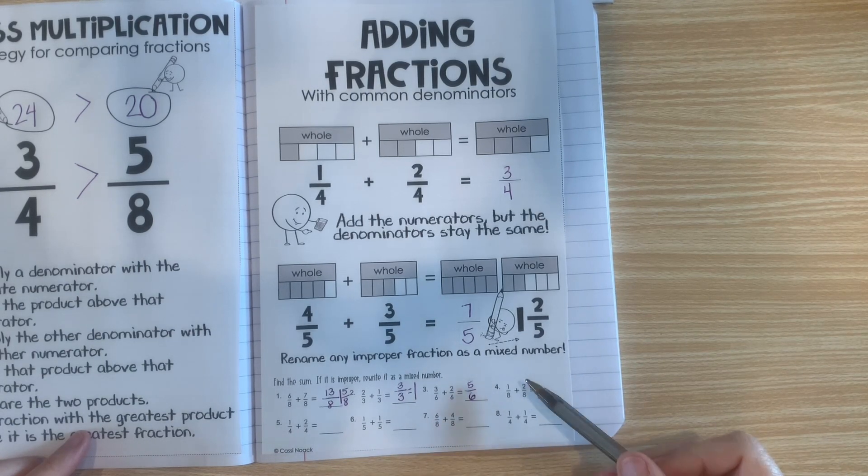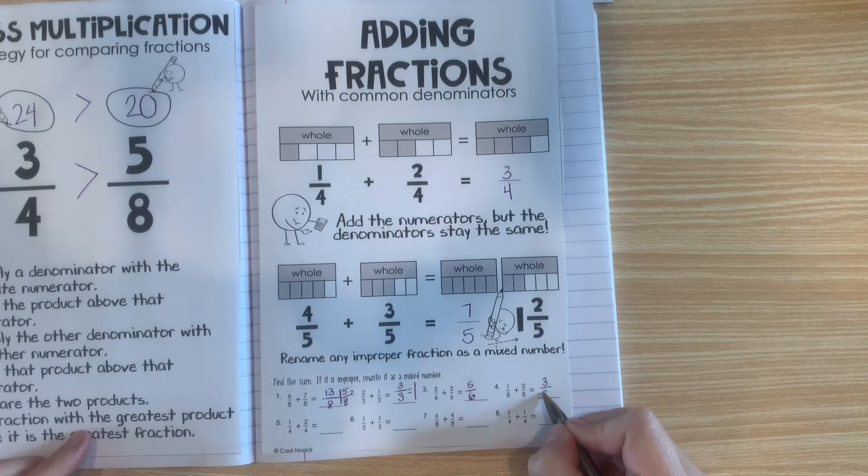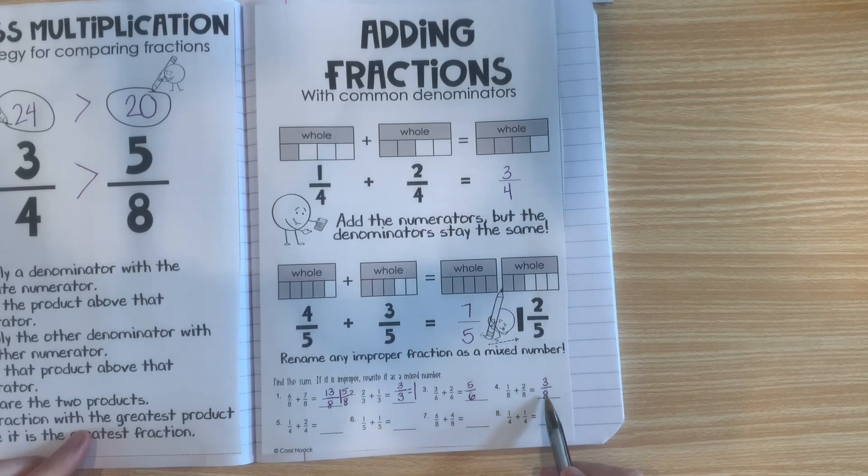Alright, let's do another one. 1 plus 2 is 3. And our denominator stays the same. 3 eighths.